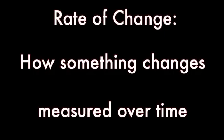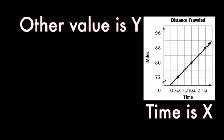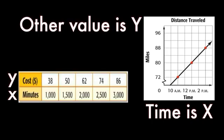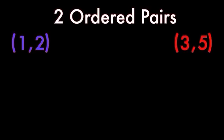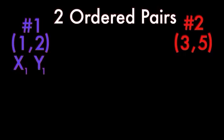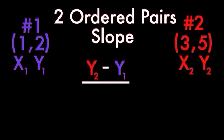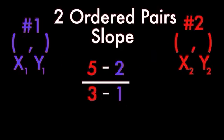Rate of change — let me define. It's how something changes, measured over time. The time is X, the other value Y. We can find these values from a chart or from a line. If we're given two ordered pairs, label them 1 and 2 — that makes these X1, Y1 and these X2, Y2. Here's another formula for the slope: Y2 minus Y1 over X2 minus X1. Plug in the values — it's still the change in Y over the change in X. The only difference: we use two points.